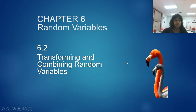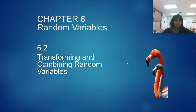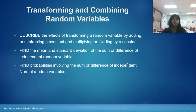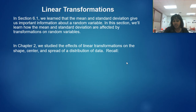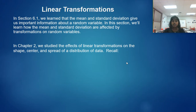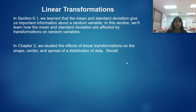Welcome to part 2 of chapter 6, where we're going to understand transformations of random variables and what happens when we combine random variables, whether it's a sum or a difference. Here are some of your learning objectives for this section. In the previous video, we understood how to calculate mean and standard deviation — not just as a simple average, but using a series or sum of sequences.